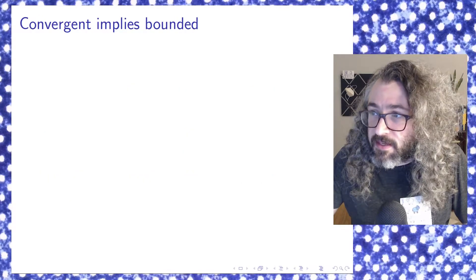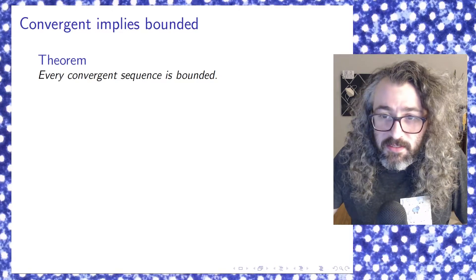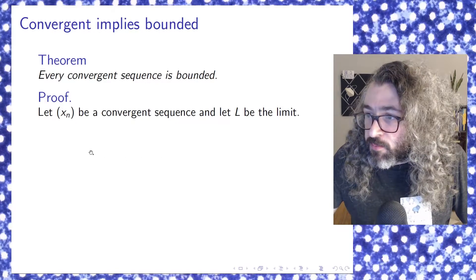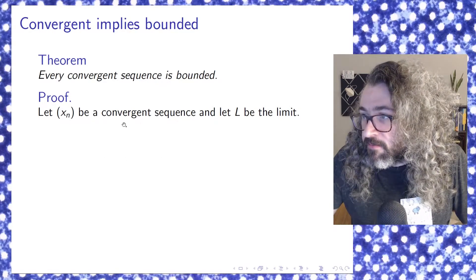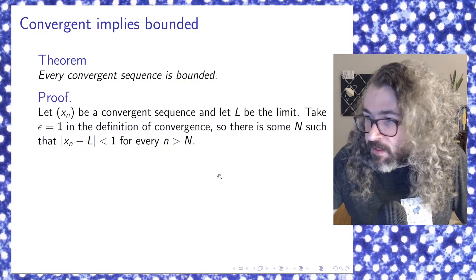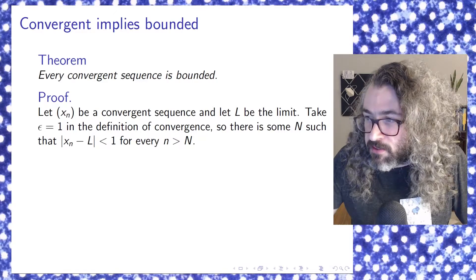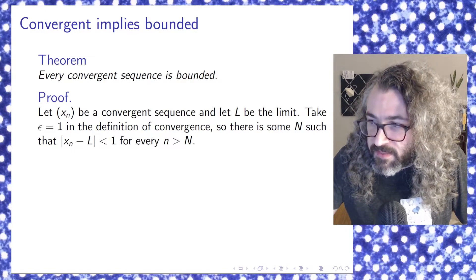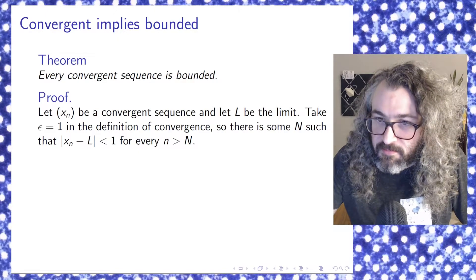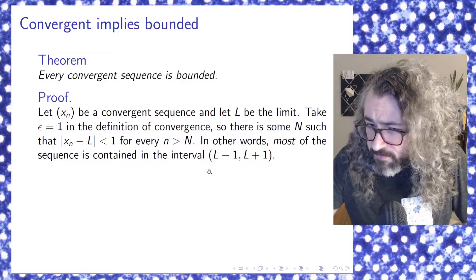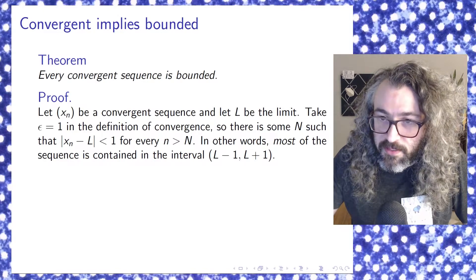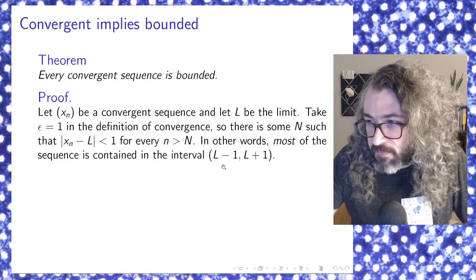So the first thing to prove is that every convergent sequence is bounded. The proof goes like this: let x sub n be a convergent sequence and let l be the limit. Take epsilon equal to one in the definition of convergence. So there has to be some big N so that the absolute value of x sub n minus l is less than one for every little n bigger than big N. Another way to say this is most of the sequence is contained in the interval from l minus one to l plus one.